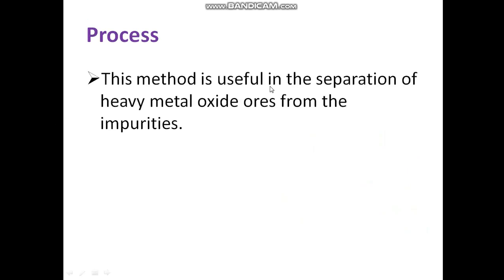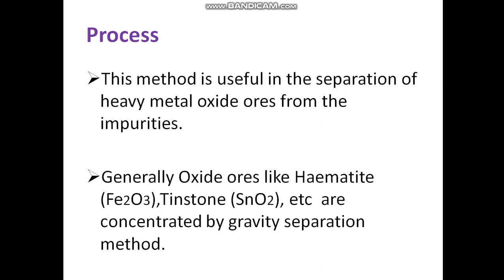This method is useful in the separation of heavy metal oxides from the impurities. Whatever heavy metal oxides are present, they can be easily separated by this method. Generally, we can take examples like hematite (Fe₂O₃), tinstone (SnO₂), etc., which are concentrated by the gravity separation method.